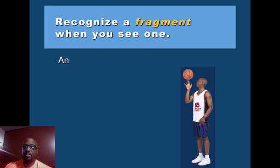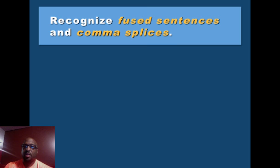'As Andre spun the ball to show off his skills' — that's another fragment; it's not a complete sentence. And finally, 'Andre spun the ball to show off his skills' — now you have a subject and a verb, which makes it a complete thought. This is something you want to write down: what is a fused sentence and what is a comma splice.